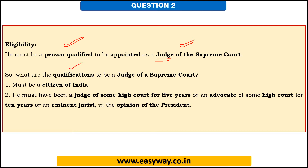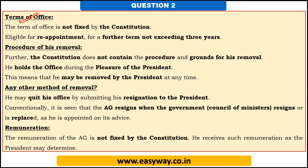To be a judge of the Supreme Court, one needs to be a citizen of India, must have been a judge of some high court for five years, or must have been an advocate of some high court for nearly 10 years, or an eminent jurist in the opinion of the president. The Attorney General's term is not fixed by the constitution and he is eligible for reappointment, but after being reappointed he cannot serve more than three years. Regarding removal, it is not explicitly mentioned in the constitution, but since the Attorney General holds office during the pleasure of the president, he may be removed by the president.